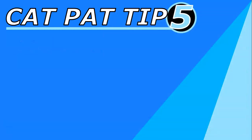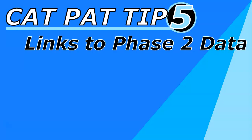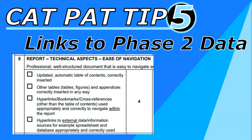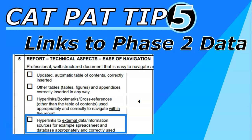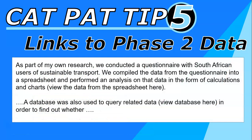My final CAT PAT tip number five is to link to your phase two data. So many students forget to add links to their spreadsheet and database. The rubric talks about hyperlinks within the report — you must be able to jump around the report using bookmarks and hyperlinks. Your table of contents allows that, but you need to add others as well to show off that skill. Don't just say 'this is what I found out' — explain how you found it out first.